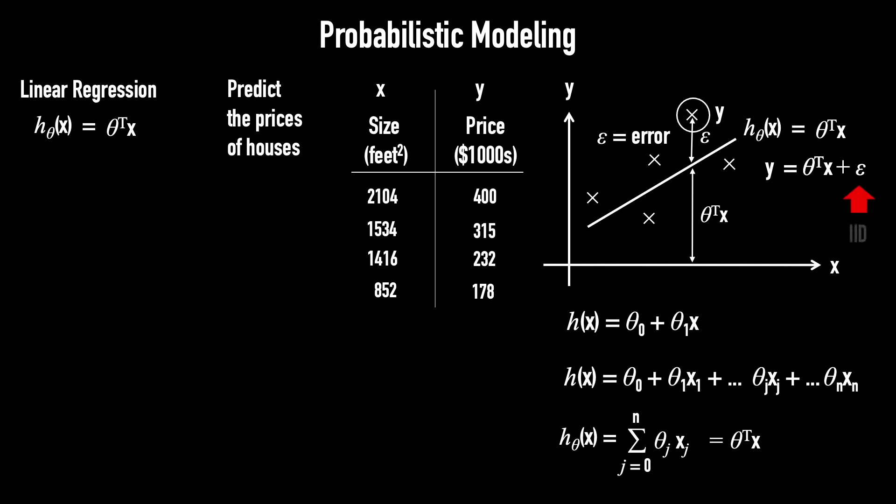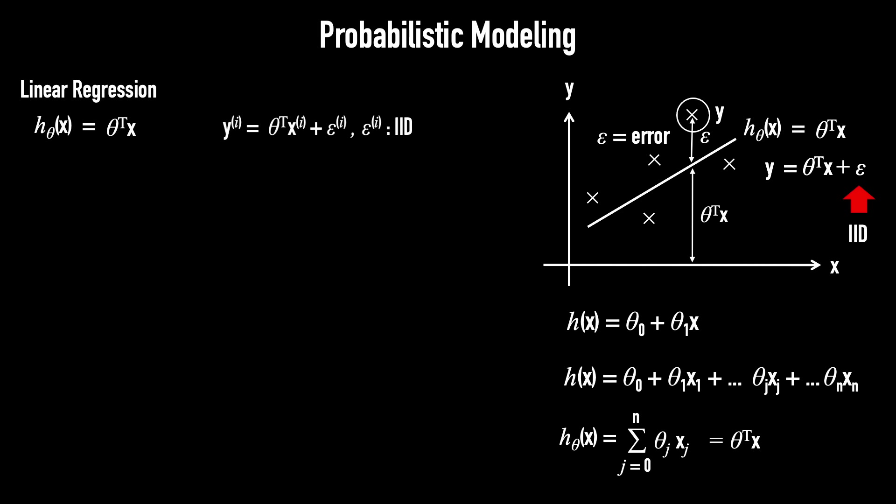By assuming that ε is independently and identically distributed, IID, our model now accounts for unmodeled effects or random noise. This gives us what we call probabilistic modeling.